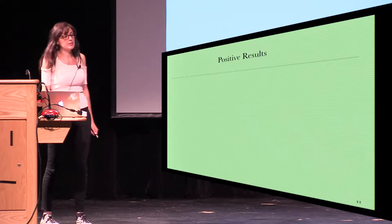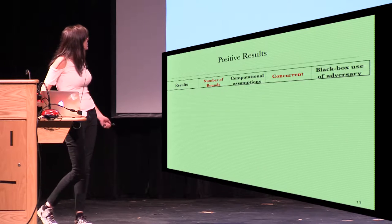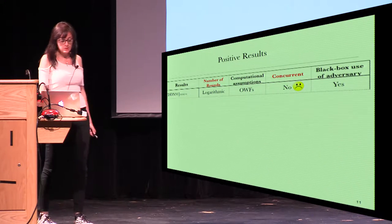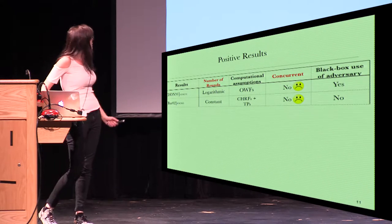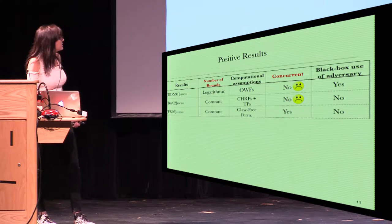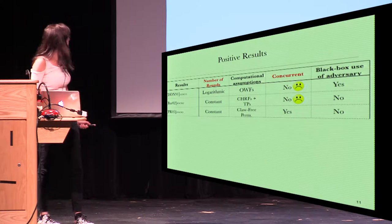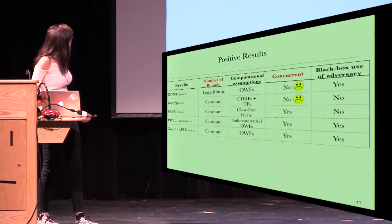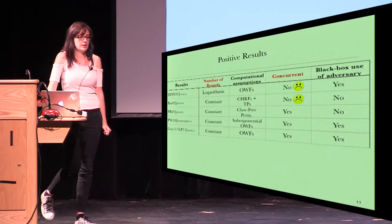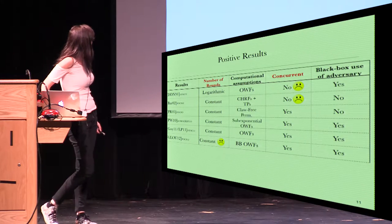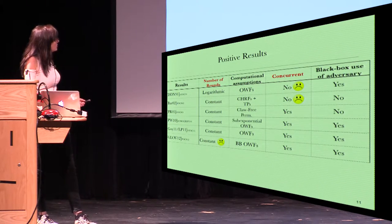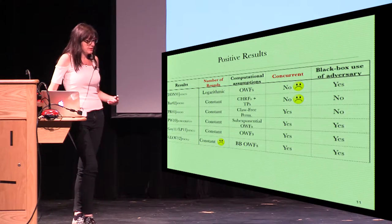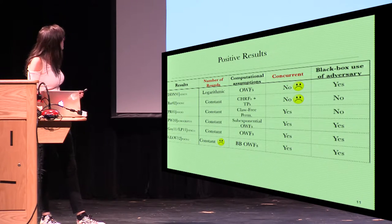Let's summarize now the state of the art of non-malleable commitment. We start with the work of Dolev et al. that constructs a non-malleable commitment with a logarithmic number of rounds. This was improved by Barak in terms of round complexity. Then this was improved by Pass-Rosen, who gave the first construction that is also concurrent. That was improved by Pass-Wee, who use the code of the adversary in a black-box way. Then this was improved by the work of Goyal and the work of Lin-Pass in terms of computational assumption, further improved by Goyal et al. The state of the art reached the best possible for several parameters, but not for the number of rounds.